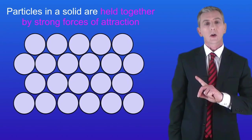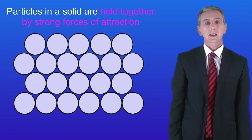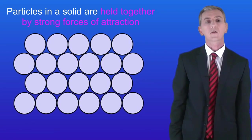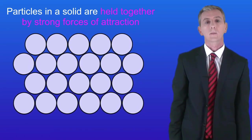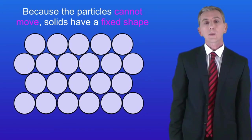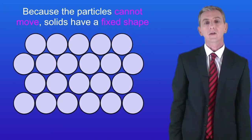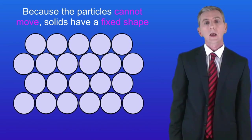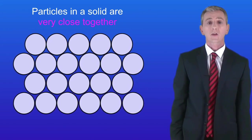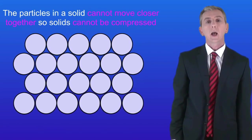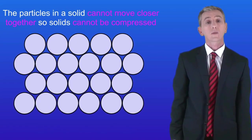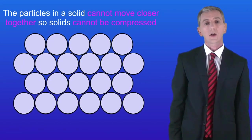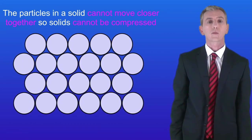Here are the particles in a solid. The first key idea is that the particles in a solid are held together by strong forces of attraction. Because the particles cannot move from place to place, solids have a fixed shape. The second point is that the particles in a solid are very close together, and because there are no spaces, the particles cannot move closer together. So solids cannot be compressed.